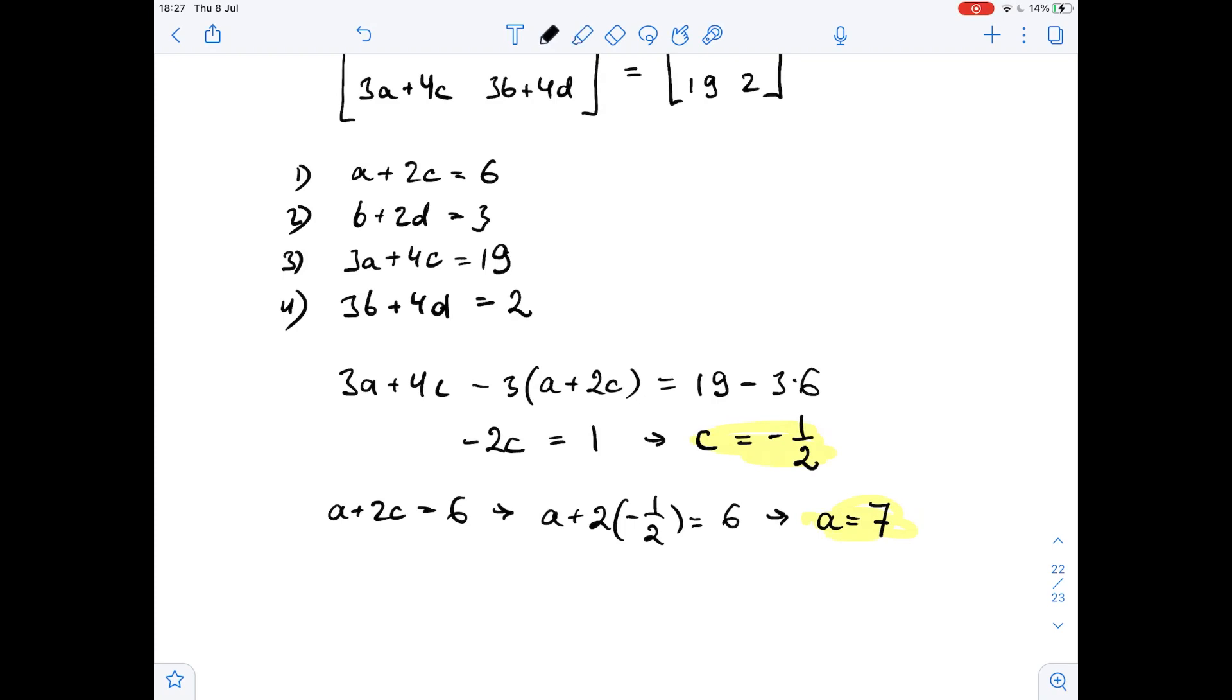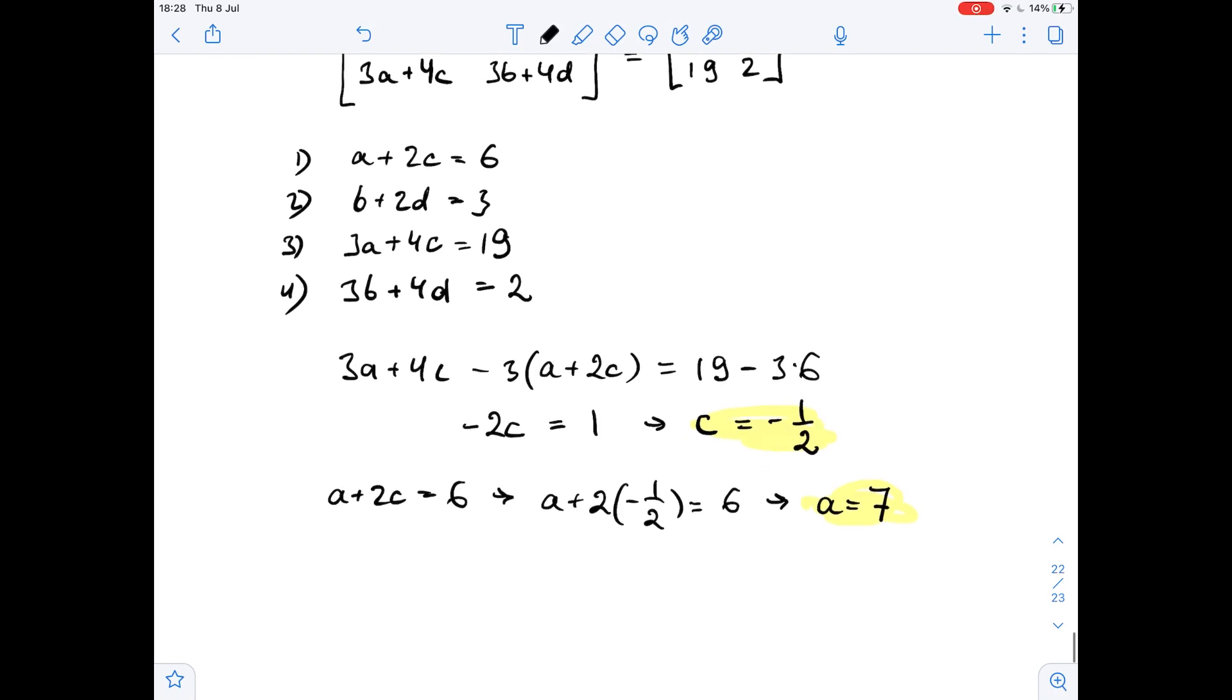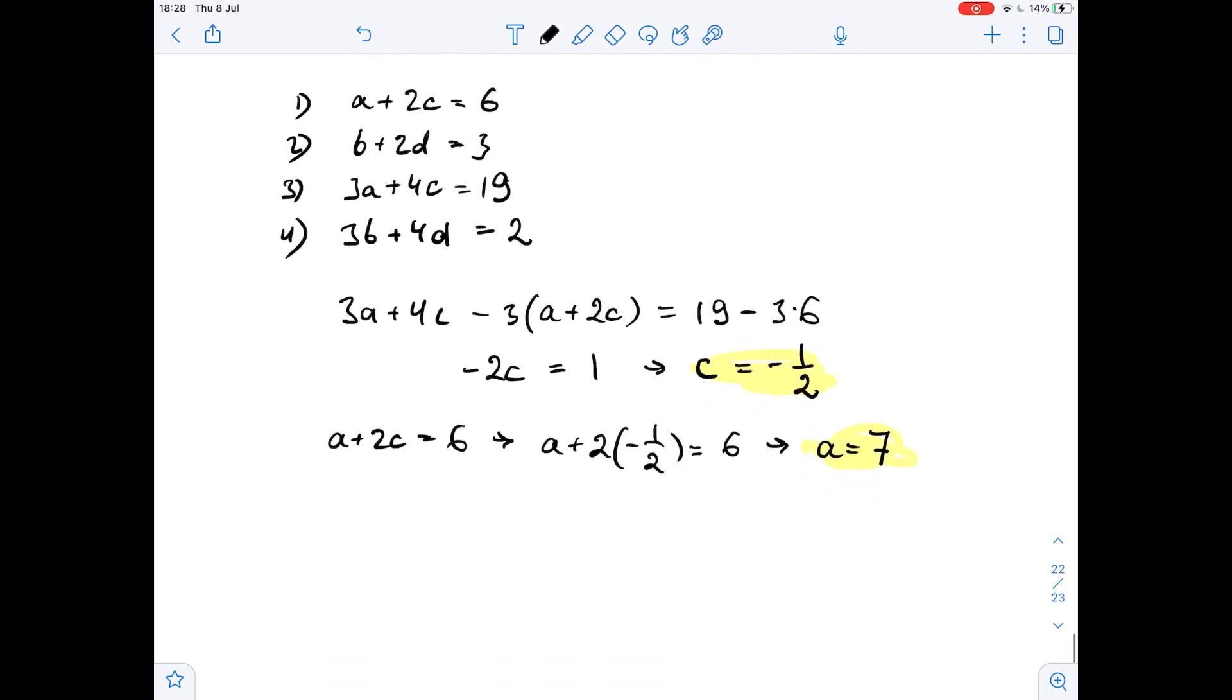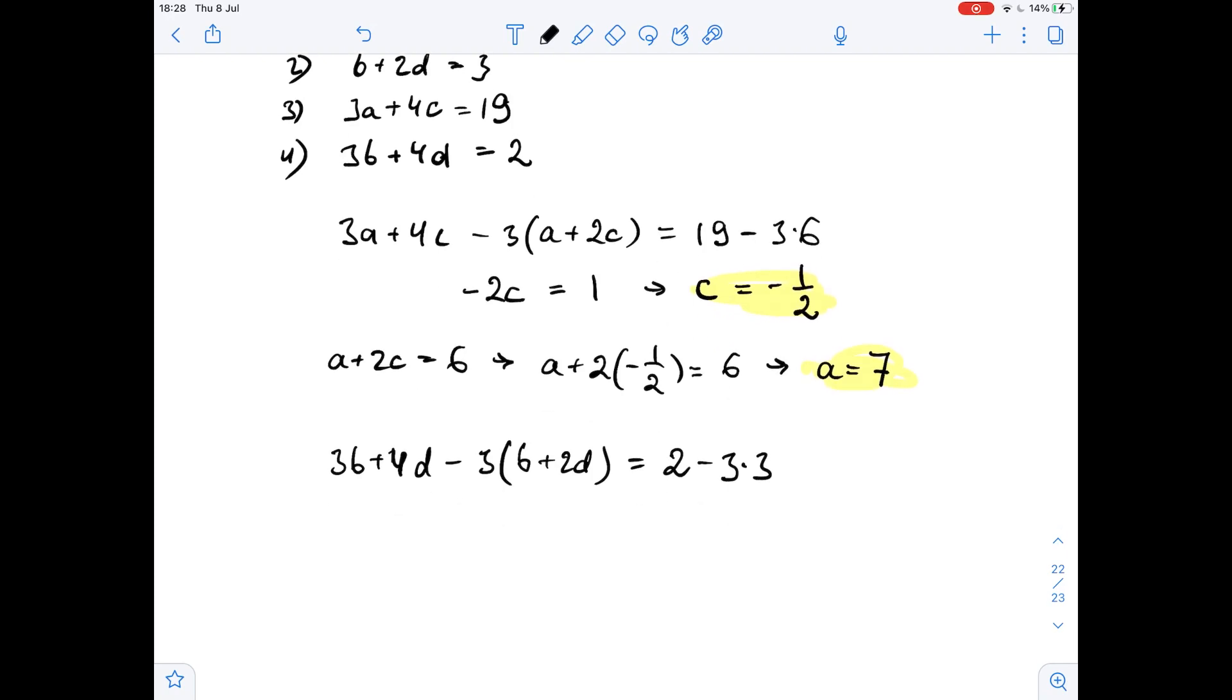Our next step, we will subtract 3 times equation 2 from equation 4. So equation 4, 3b plus 4d, minus 3 times equation 2: 3b cancels out, 4d minus 6d is negative 2d equals negative 7.